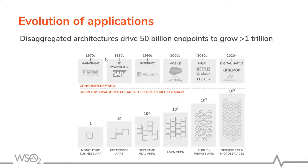If you look at the evolution of applications, in early days we had mainframes and monolithic apps. Over time different vendors entered the market with enterprise applications, then department-specific apps, SaaS apps, private and public PaaS. These days serverless and microservices have become very popular. We can see day by day the number of endpoints grows — as of now there are around 50 billion endpoints, expected to reach 1 trillion within the next two years. This is why API management and digital transformation are very important.